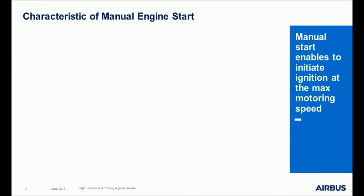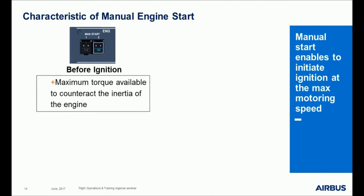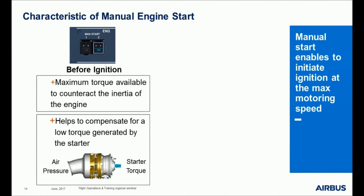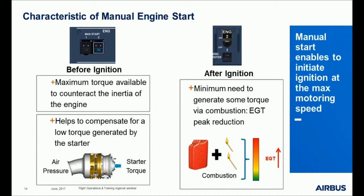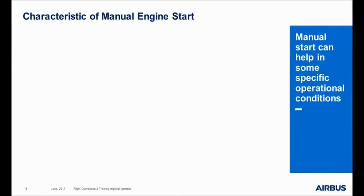The characteristic of manual engine start is that it enables ignition when the maximum motoring speed is reached, which provides three advantages. Before ignition, it maximizes the torque available to counteract engine inertia, and helps compensate for low torque generated by the starter. After ignition, being at maximum motoring speed minimizes the need to generate torque via combustion, which reduces the EGT peak.